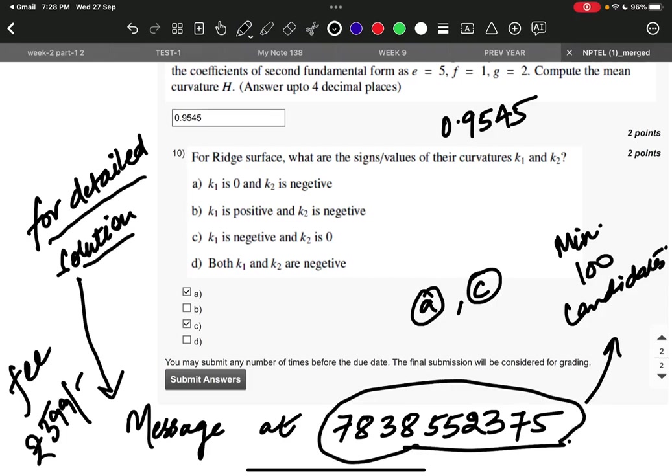We will look for minimum 100 candidates. If there would be 100 candidates, we will be keeping the fee as rupees 599 only. At 599 rupees you will be getting the detailed solution of these questions.